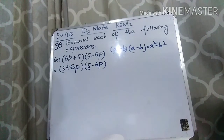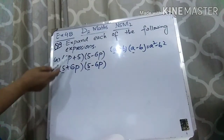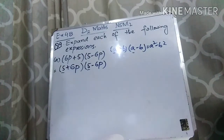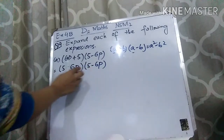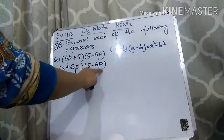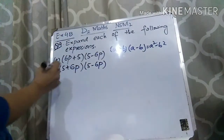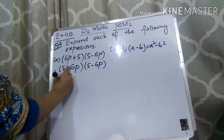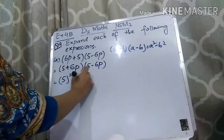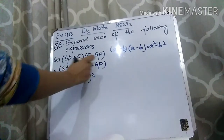We can only change the position with a plus sign, and as both numbers are having a plus sign, that's why I have rewritten the bracket as (5 + 6P). Now this is the formula: A plus B times A minus B, and the formula is equal to A squared minus B squared. So we will make it equal to A squared minus B squared.